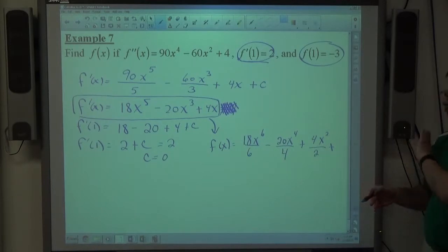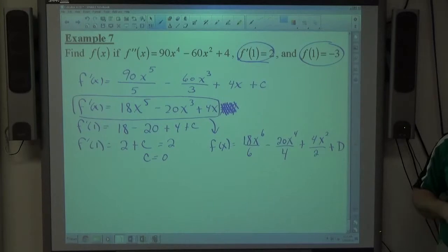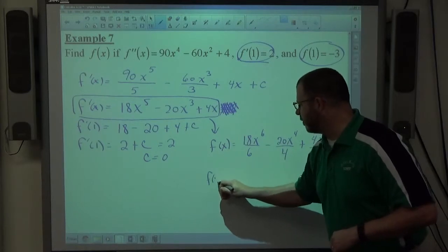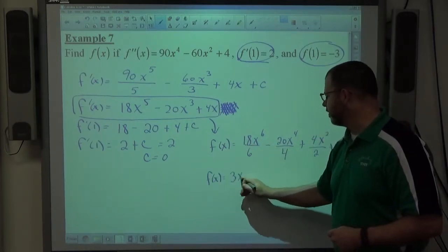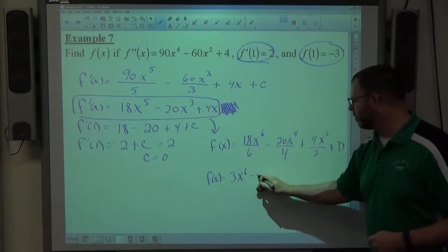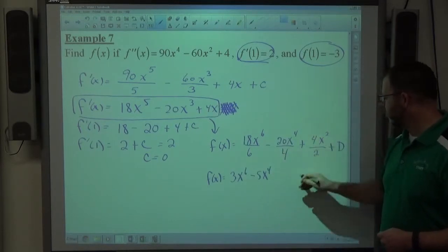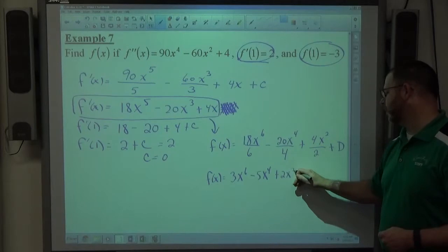I can call it c here if I want to. If you don't like having the same letter on this paper at the same time, you can even call it d here. It doesn't matter what you call the constant, just so long as you're accounting for a constant. So f of x, if I simplify each object as much as possible, 18 over 6 is 3, x to the 6, 20 divided by 4 makes minus 5x to the 4th, 4 divided by 2 makes 2x squared plus d.